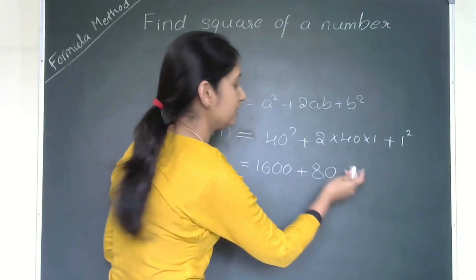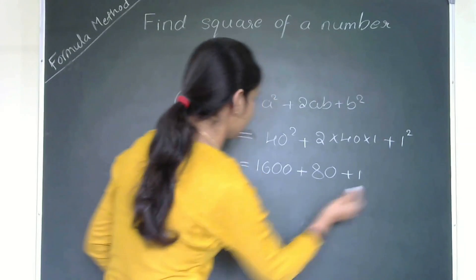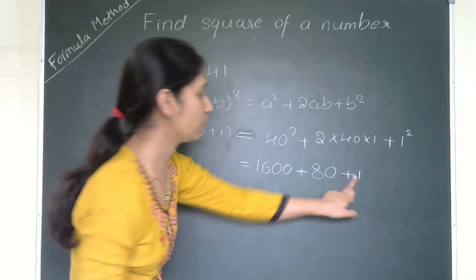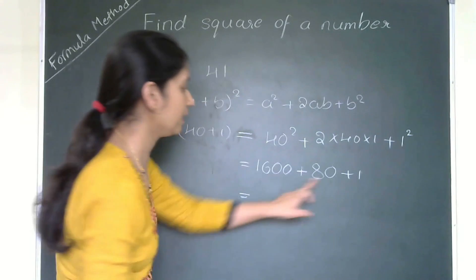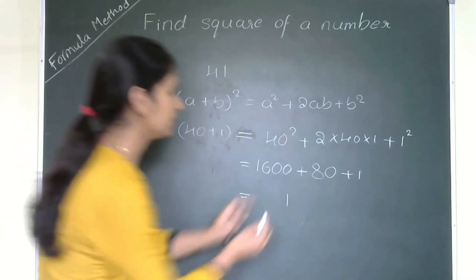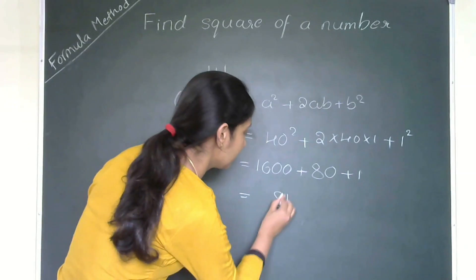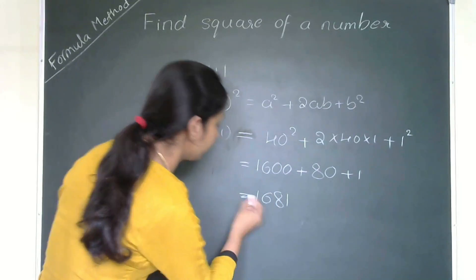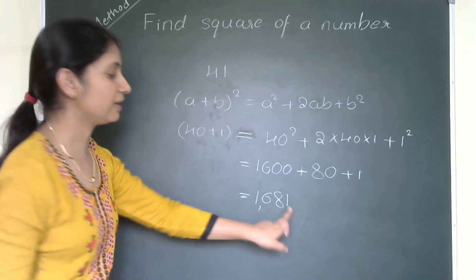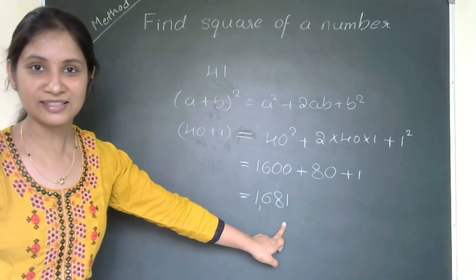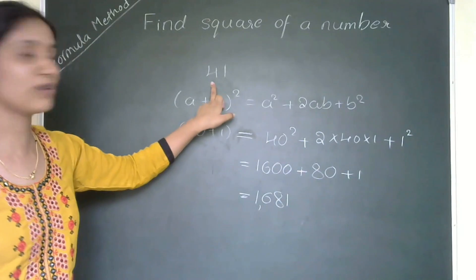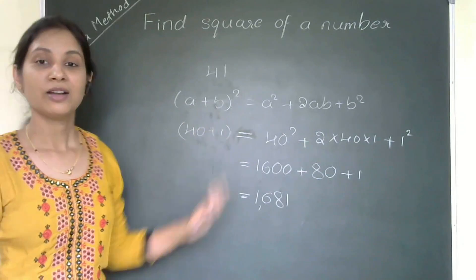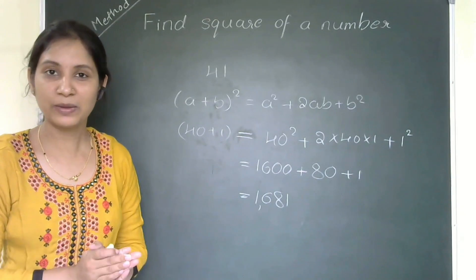So we have 1600 plus 80 plus 1. In the unit place you get 1, in the tens place 8 plus 0 is 8, in the hundreds place 6 and 1. So 1681 is the answer — that is the square of 41. Using this formula we have found it very quickly.